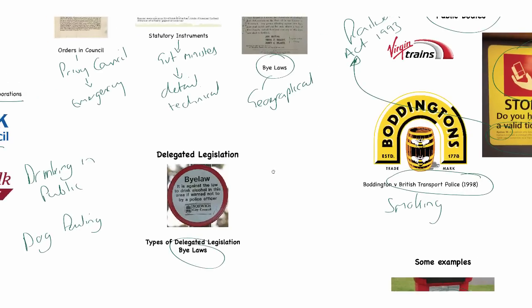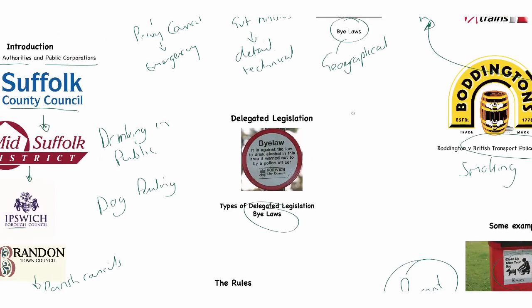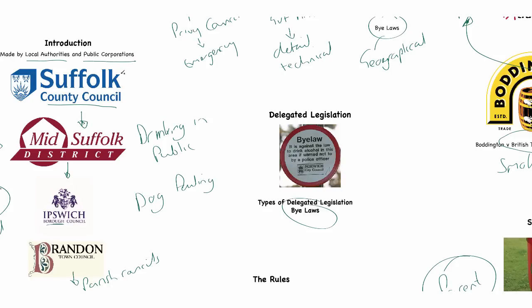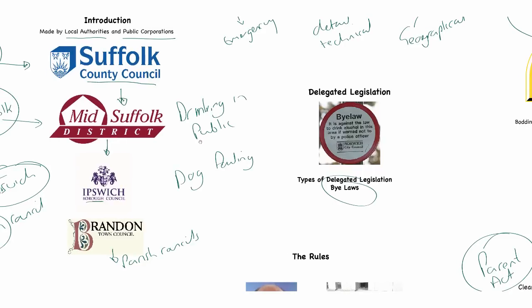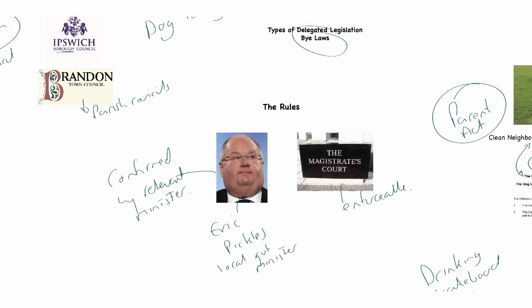Bylaws are created by local authorities and public corporations to deal with the geographic specialities of a particular area. The rationale behind that is that these areas know their districts better than Parliament does, and therefore it makes sense that these districts make laws applying to that geographical area. A county council for a county, district for the district, borough for the local borough, and town for the local town. They have to be confirmed by the relevant minister and are then enforceable in the court.